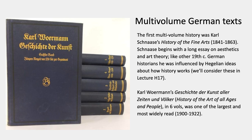The next development in German world art histories was multi-volume texts, putting in more detail. The first multi-volume history was Karl Schnase's History of the Fine Arts, which begins with a long essay on aesthetics, because Schnase was a student of Hegel, and we'll consider those Hegelian ideas more in later history lectures. Vorermann's History of Art of All Ages and People, in six volumes, was the most widely read, dating from 1900 to 1922, at the beginning of the 20th century.